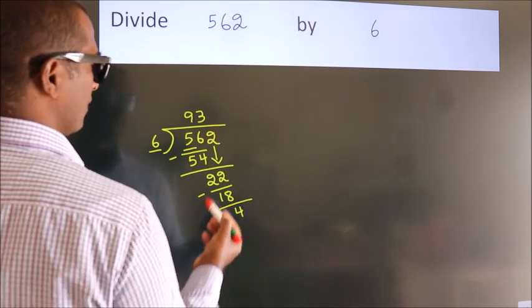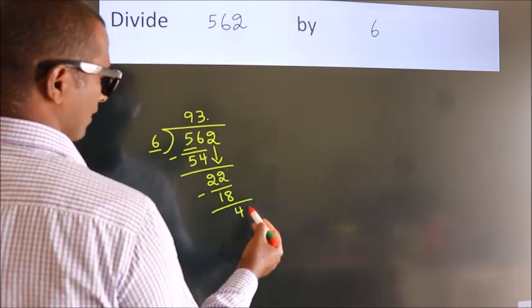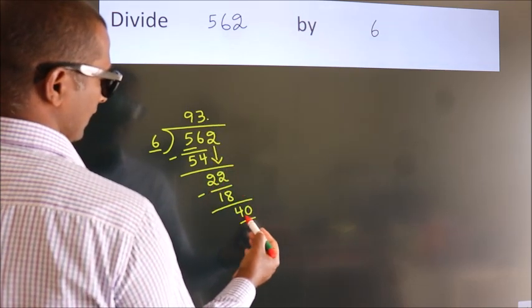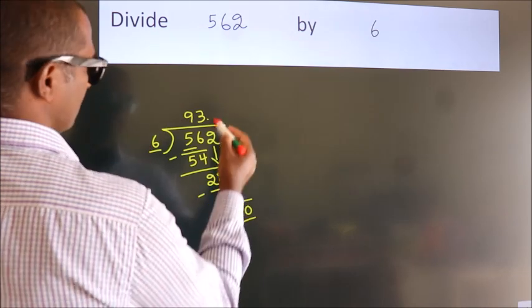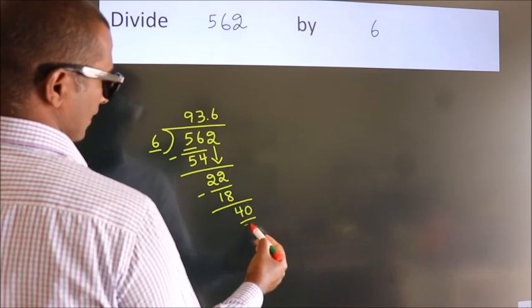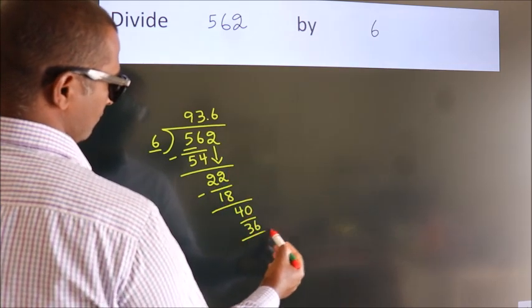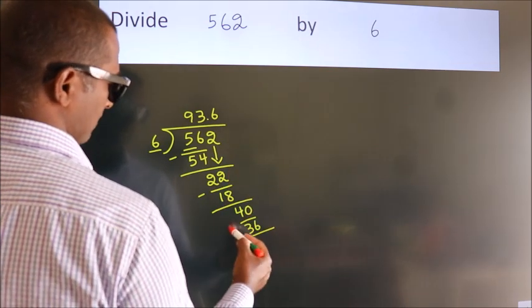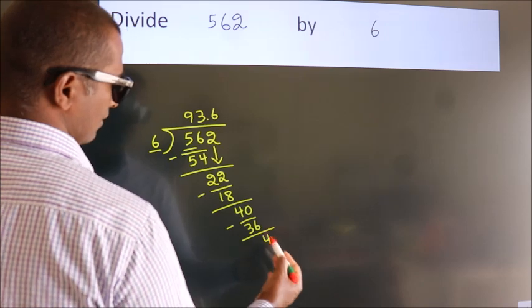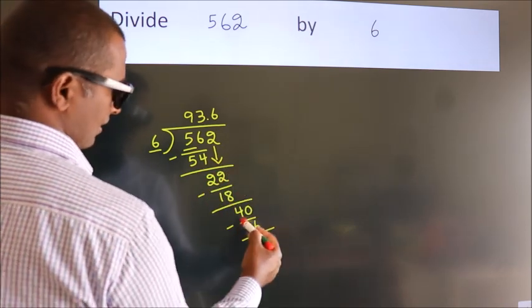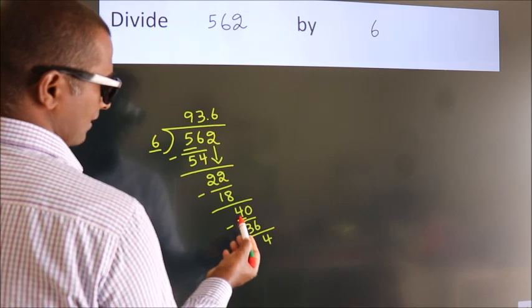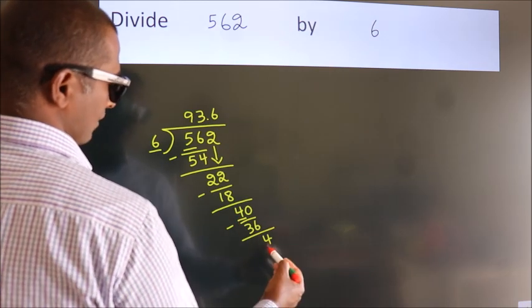So what we do is we put dot, take 0, so 40. A number close to 40 in sixth table is 6 times 6, 36. Now we subtract, we get 4. Now you observe we had 4 here and we got...